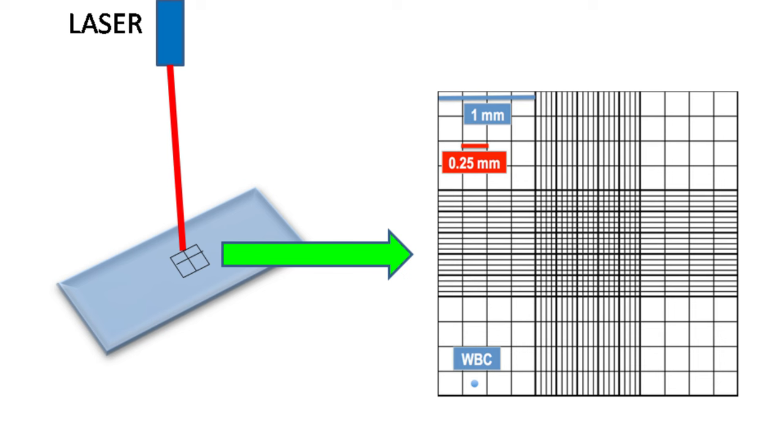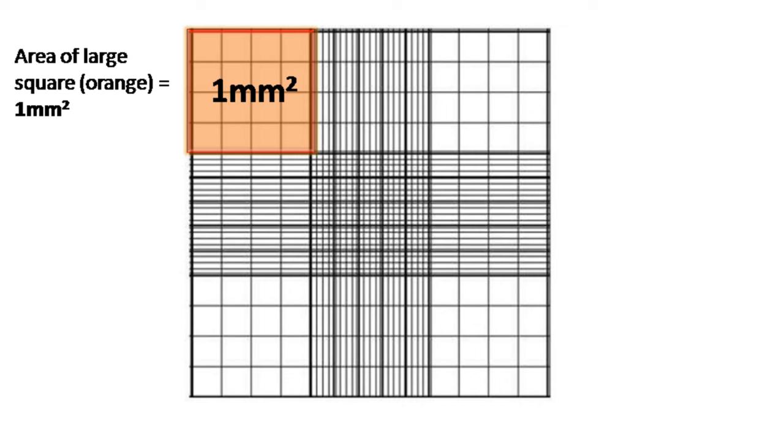The glass of hemocytometer is carefully crafted with a laser such that the area bounded by the line is known. All the colored squares that you see here have the area of one millimeter square.